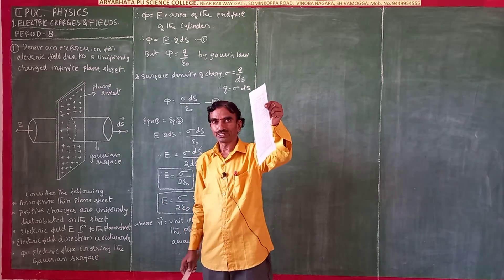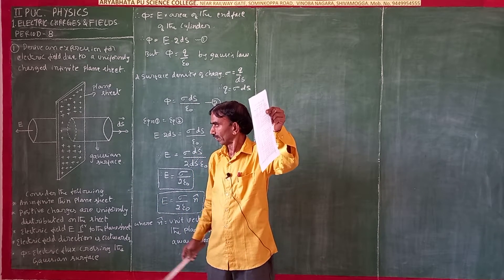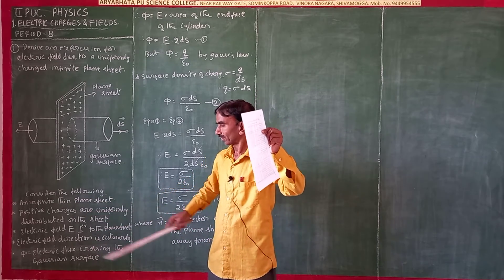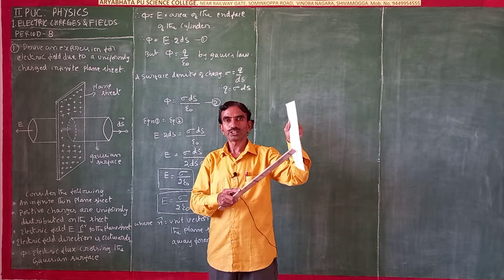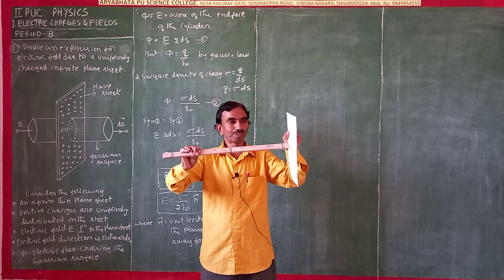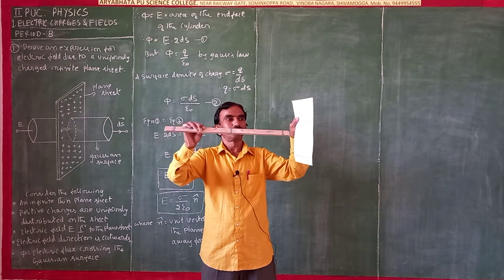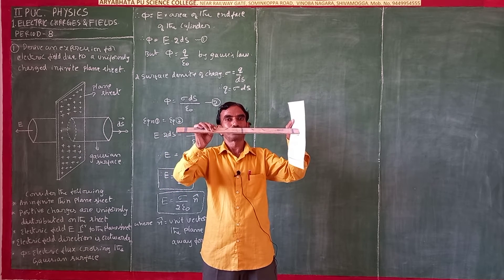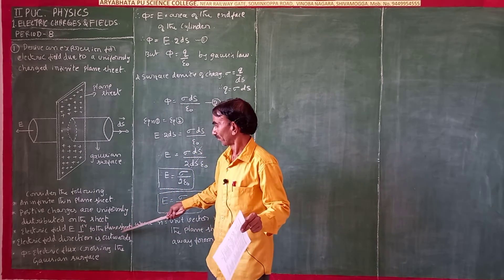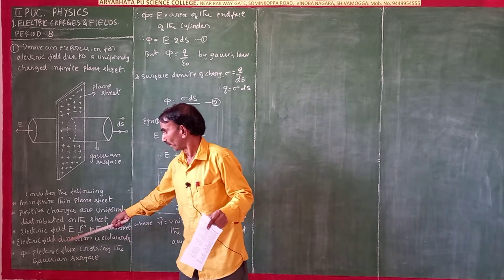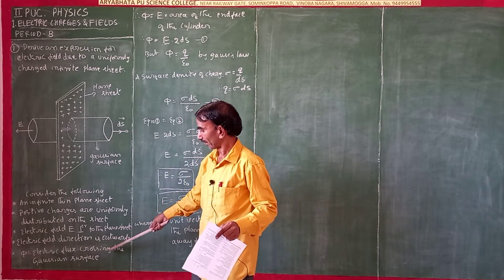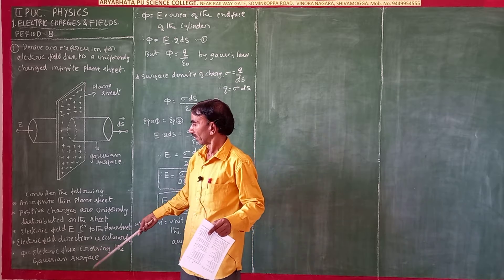Consider an infinite thin plane sheet. Positive charges are uniformly distributed on this sheet. Electric field E is perpendicular to the plane sheet, and its direction is outwards. Phi is equal to the electric flux crossing the Gaussian surface through this small area.